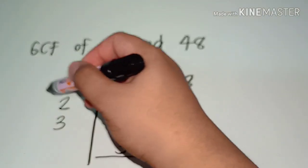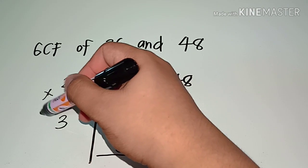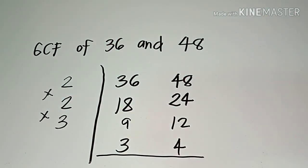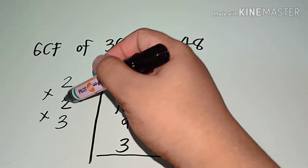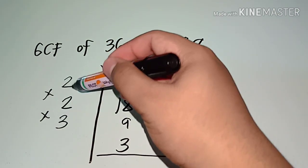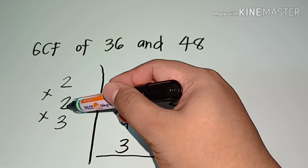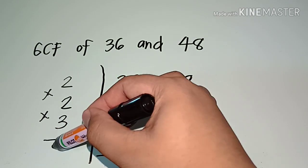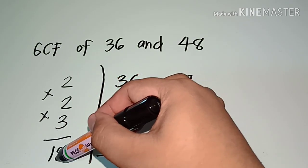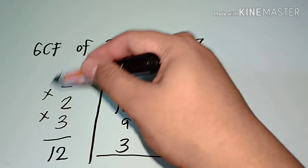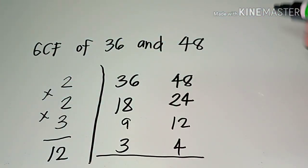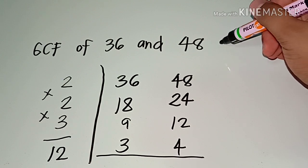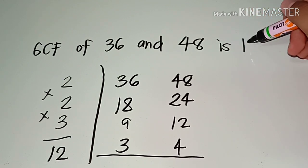What you do next is multiply the numbers on the left side to get the GCF. The numbers are 2, 2, and 3. So 2 times 2 is 4, times 3 is 12. You simply multiply the numbers you used to divide. So the GCF of 36 and 48 is 12.